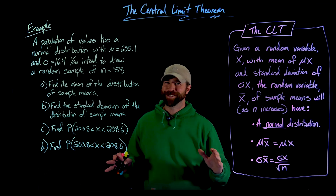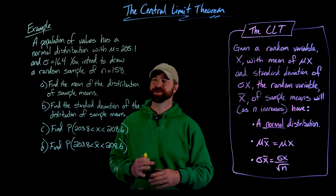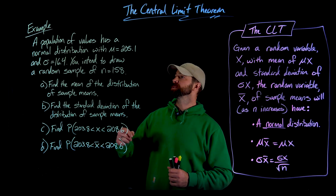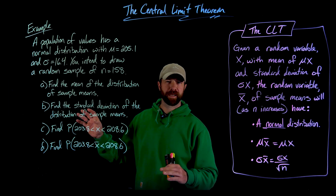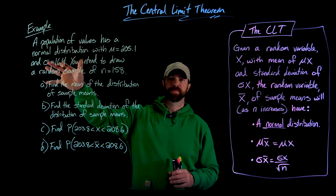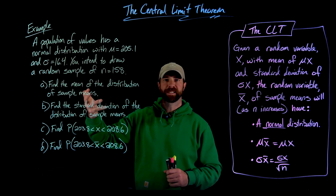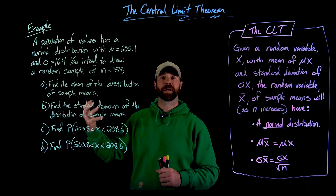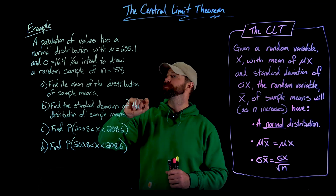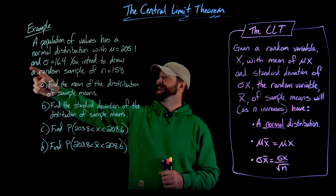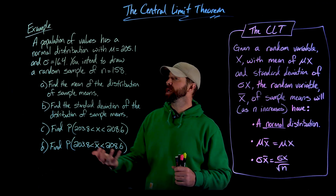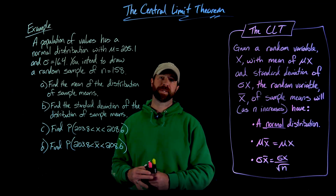Let's ground ourselves with an example — I know it's a lot of vocabulary and notation. In our example, we have a population of values that has a normal distribution. Again, that's not necessary for the CLT, but since we know the original population has a normal distribution, we can calculate probabilities in the same way we did in previous conversations about normal distributions. The population has a mean of 205.1, a standard deviation of 16.4, and we're intending to draw a random sample of n = 158.